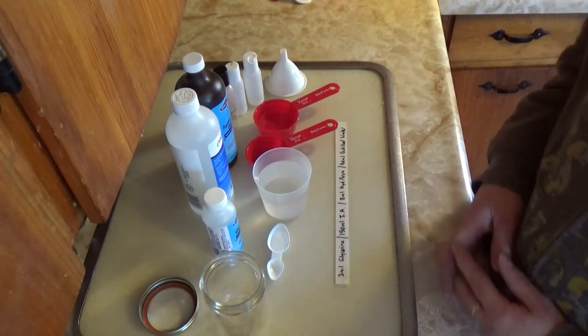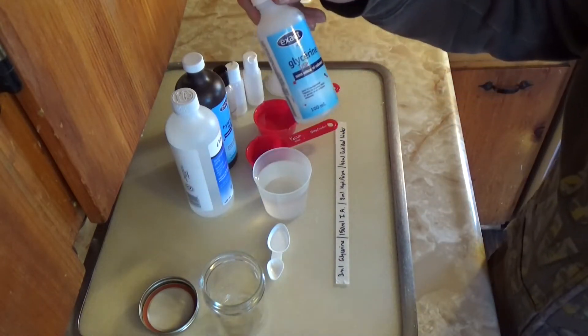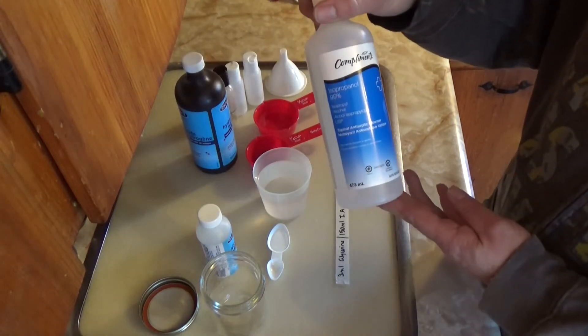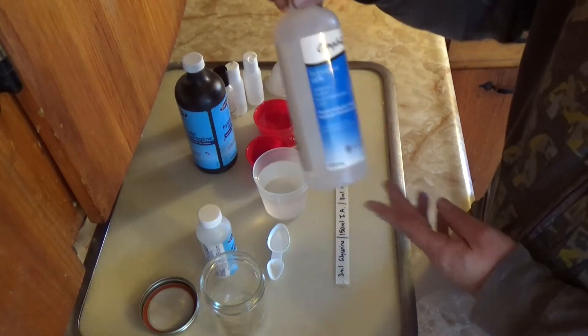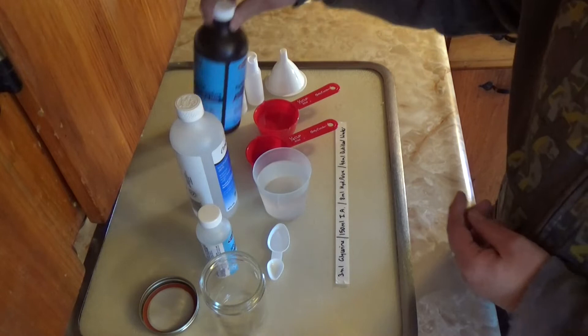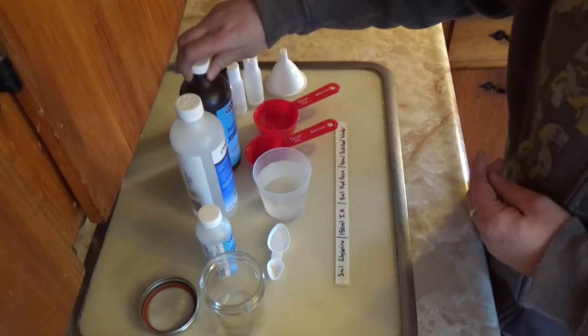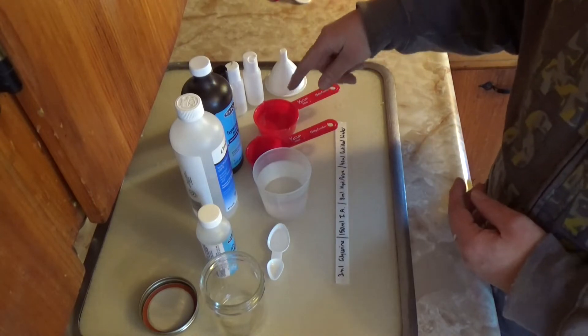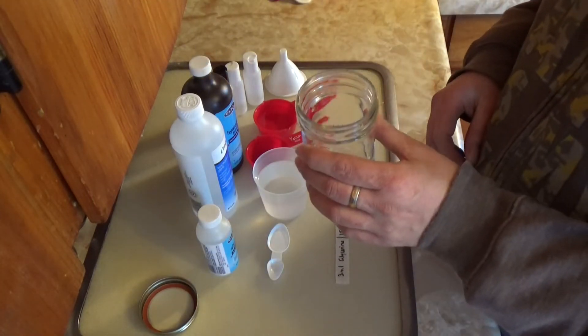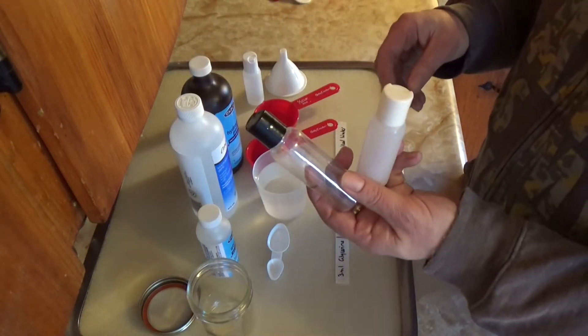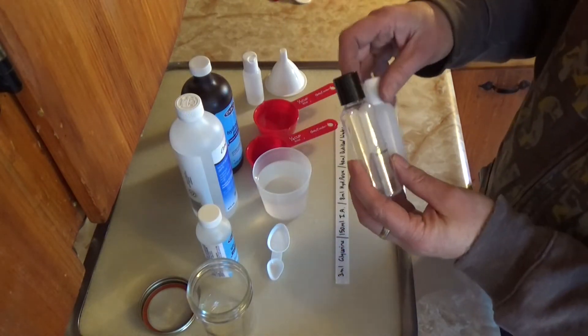The ingredients I'll be using are glycerin, isopropyl alcohol 99%, hydrogen peroxide 3%, and some distilled water. I've got a container to mix it in and some little squeeze containers which I'm going to use to put it in when we use it.